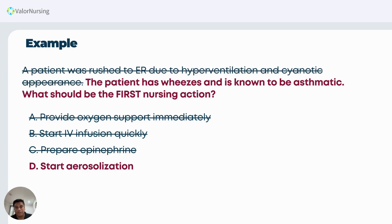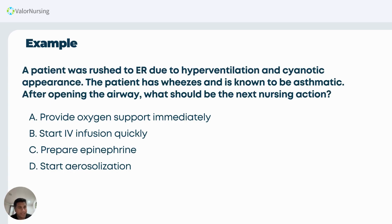The best answer is D — start aerosolization — because for an asthmatic patient, you need to open the airway first. Airway is the priority here. Most students fail to get the right answer because they immediately think the patient is having difficulty breathing and needs oxygen. But take note: the patient cannot get the right amount of oxygen if the airway is not open. The reason for wheezing is that the airway is too narrow — inflamed or in bronchospasm — so oxygen cannot pass through.